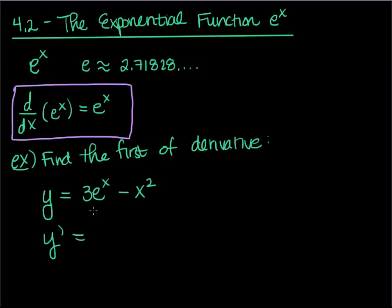Well, it would just be 3 as a constant, so I can carry the constant over times the derivative of e^x which is just e^x minus 2x. We're done, that's it.